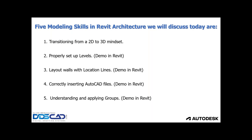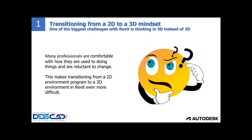Among the topics we're going to talk about, there's one that is always a hard topic to discuss between people making the transition from other applications like AutoCAD to Revit. This is the first one: transitioning from a 2D environment mindset to a 3D mindset. Many people say they've been using Revit for a couple of years but still feel it's not quite there, wondering what it takes to fully make the transition.